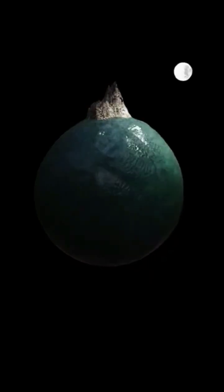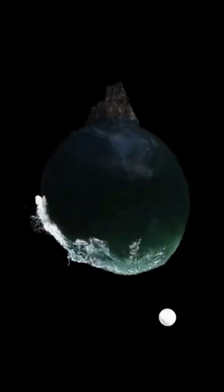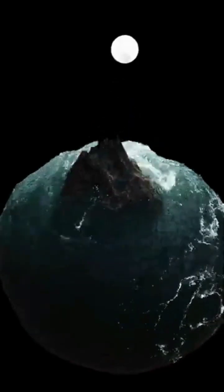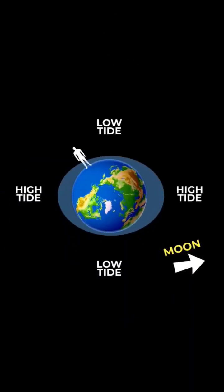As the Moon orbits around the Earth, its gravitational force creates a phenomenon known as tidal bulges. The Moon's gravity pulls the water on Earth's surface towards it, forming two tidal bulges, one facing the Moon and another on the opposite side of the Earth.